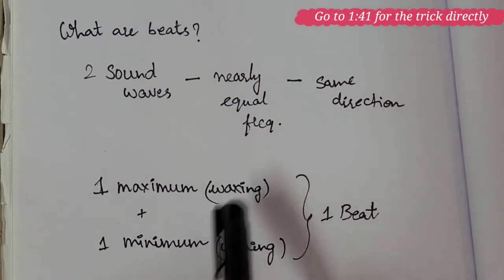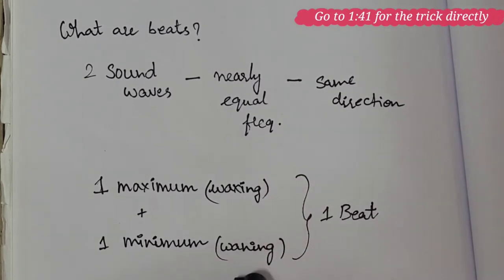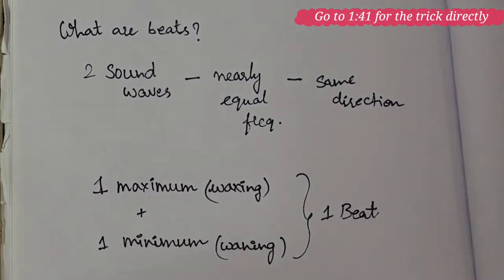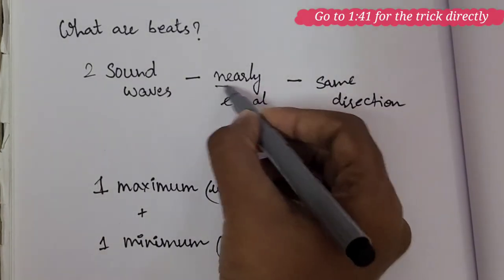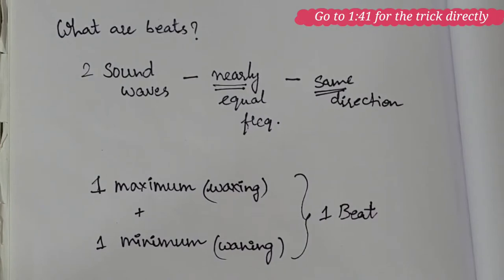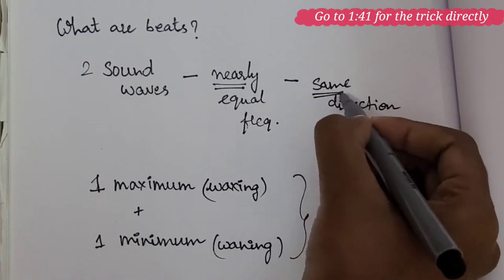Maximum is also called as waxing and minimum is also called as waning. Here, you should concentrate on two points. One is nearly equal frequency or similar frequency but not same frequency. Second, in the same direction.